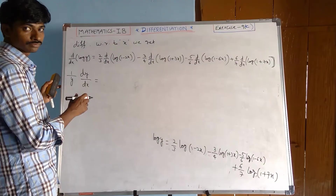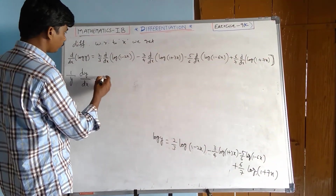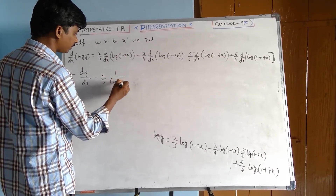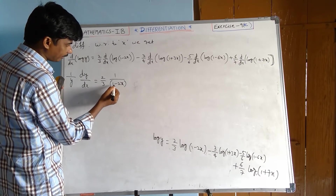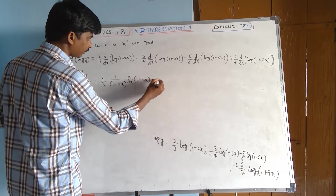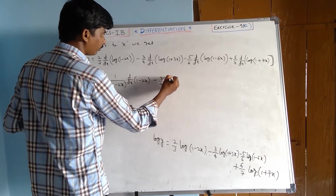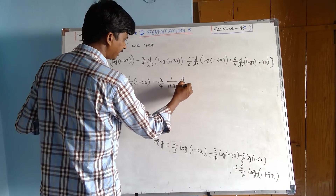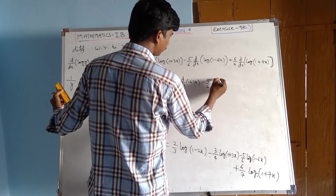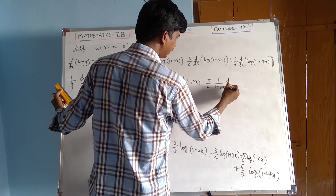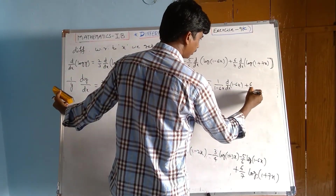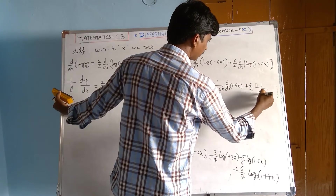The left side becomes (1/y) · dy/dx. On the right, d/dx of log u = 1/u times the inner derivative. So: 2/3 · 1/(1 minus 2x) · d/dx(1 minus 2x), minus 3/4 · 1/(1 plus 3x) · d/dx(1 plus 3x), minus 5/6 · 1/(1 minus 6x) · d/dx(1 minus 6x), plus 6/7 · 1/(1 plus 7x) · d/dx(1 plus 7x).